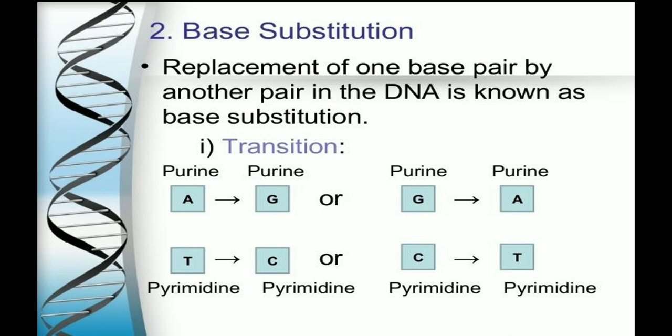The replacement of one base pair by another pair in DNA is known as base substitution. Transition is the substitution of a purine for a purine or a pyrimidine for a pyrimidine — for example, A to G, or C to T.